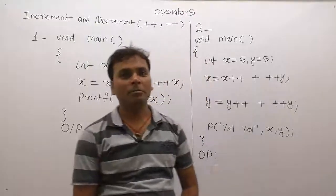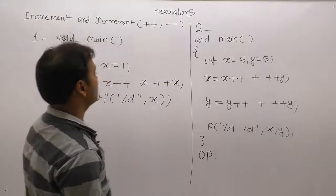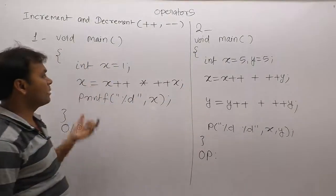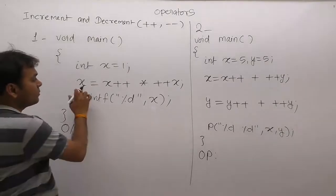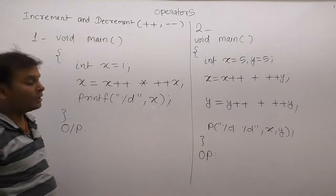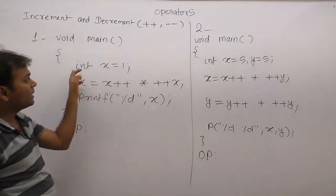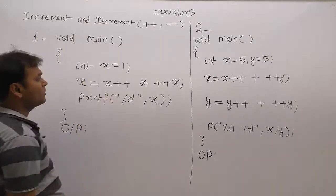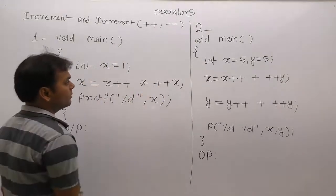Let's look at assignment operations. In program one, we need to identify the types of operations — is it assignment or initialization? It is assignment because the declaration of x is already performed, and after that we are applying assignment operations, including increment and decrement operations.